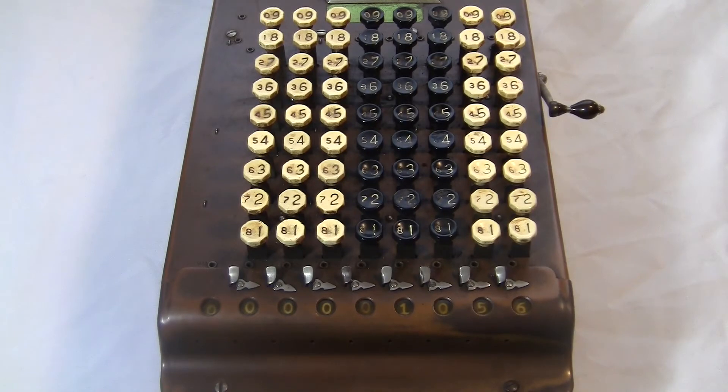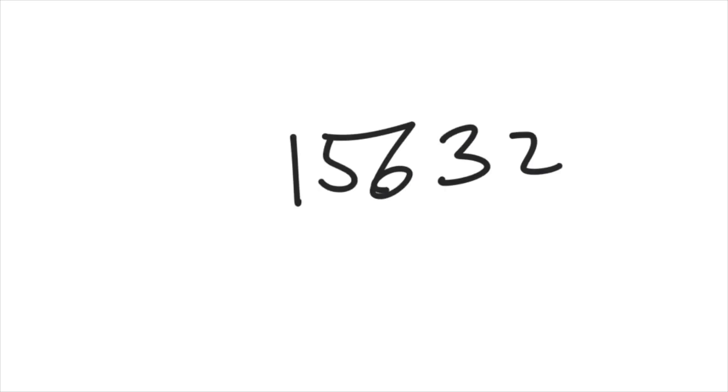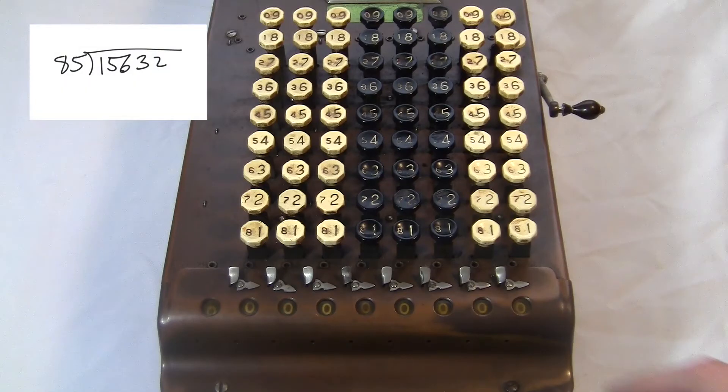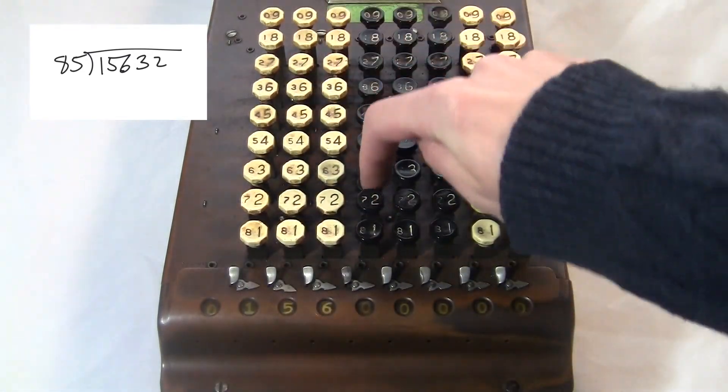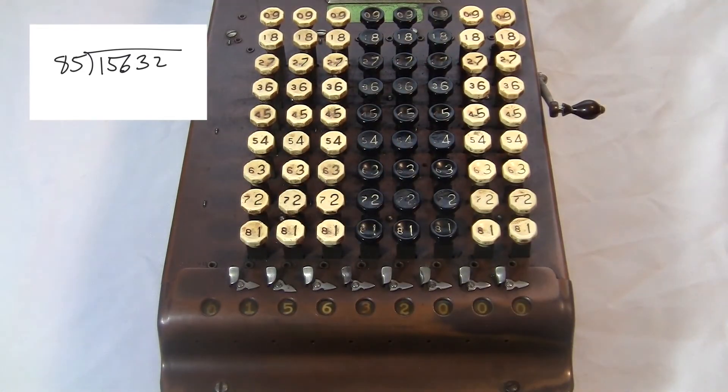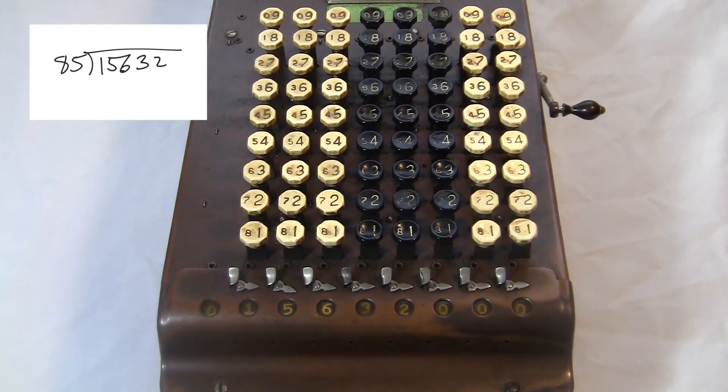So let's try to do division. 15,632 divided by 85. So we do this by entering the big number first. I'm going to enter 15,632 on the left side of the machine, which will let me compute as many decimal digits as possible as we go out to the right.